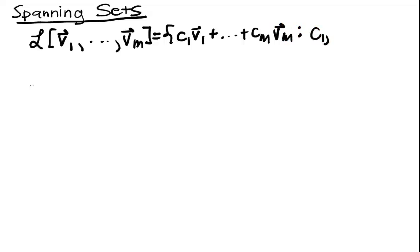So in this case, C1 all the way up to Cm, those are real numbers, and I'm just taking all possible linear combinations.